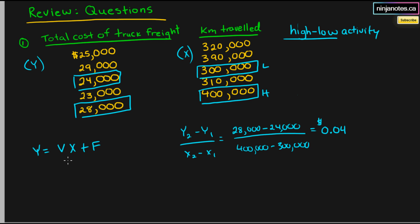So that is our slope, and our slope is v. So now we can have this equation, which is y is equal to 0.04x plus f.